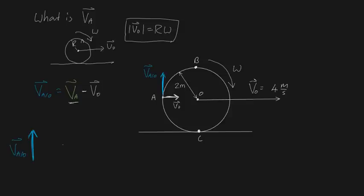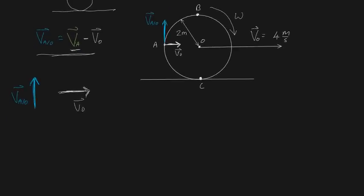So I'm going to draw these velocity vectors. VAO is going to be upwards — we don't know its magnitude yet, but we know it's up. VO is to the right at 4 meters per second, as given in the question. We don't know anything yet about the velocity of A — not its direction or its magnitude. That's what we'll use this formula to calculate.